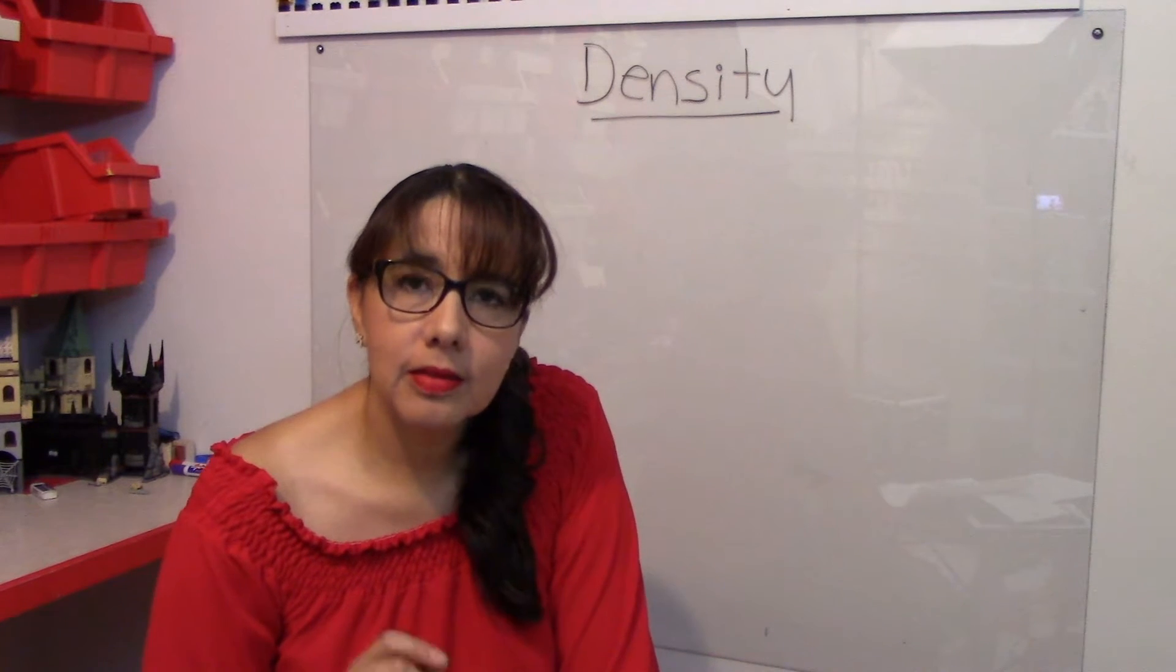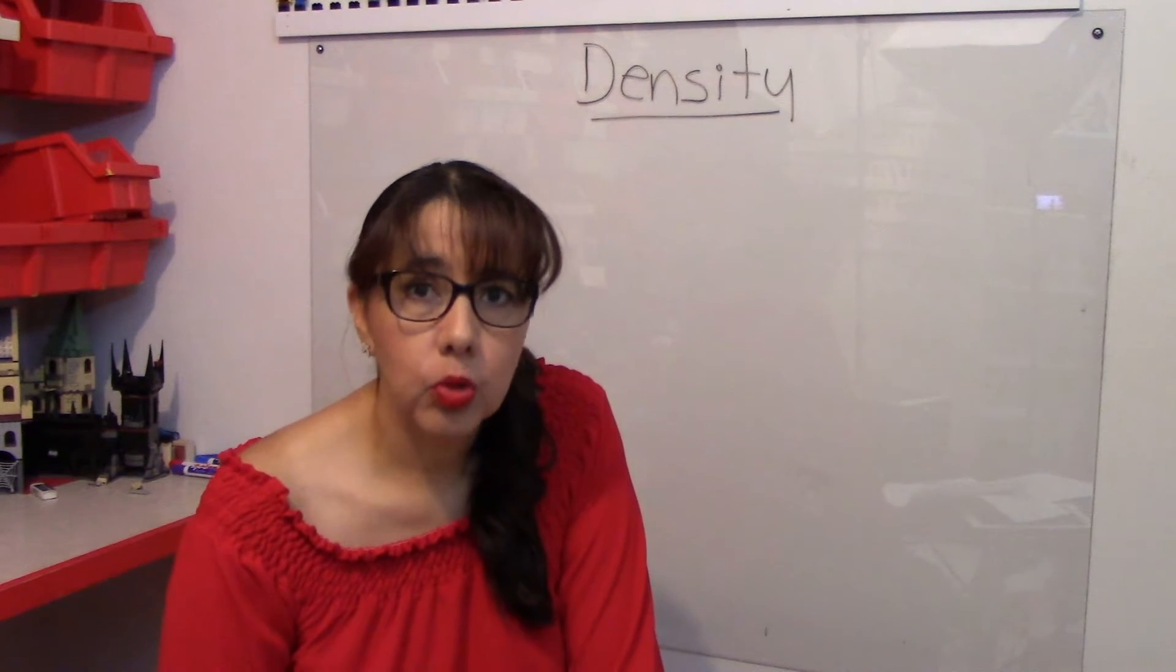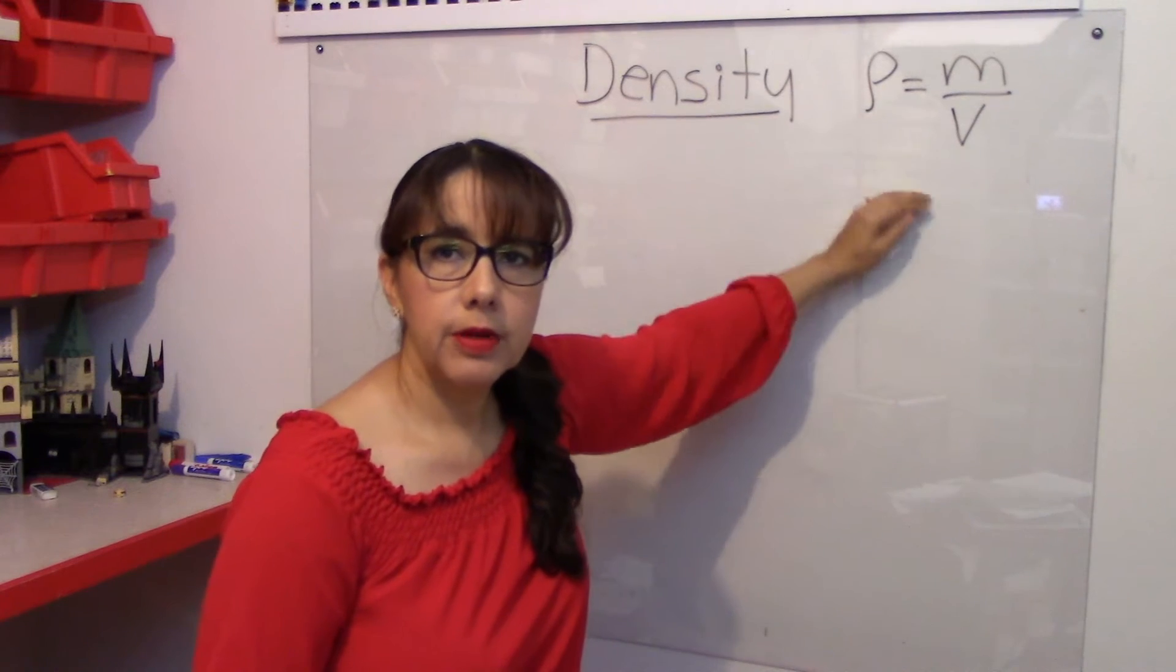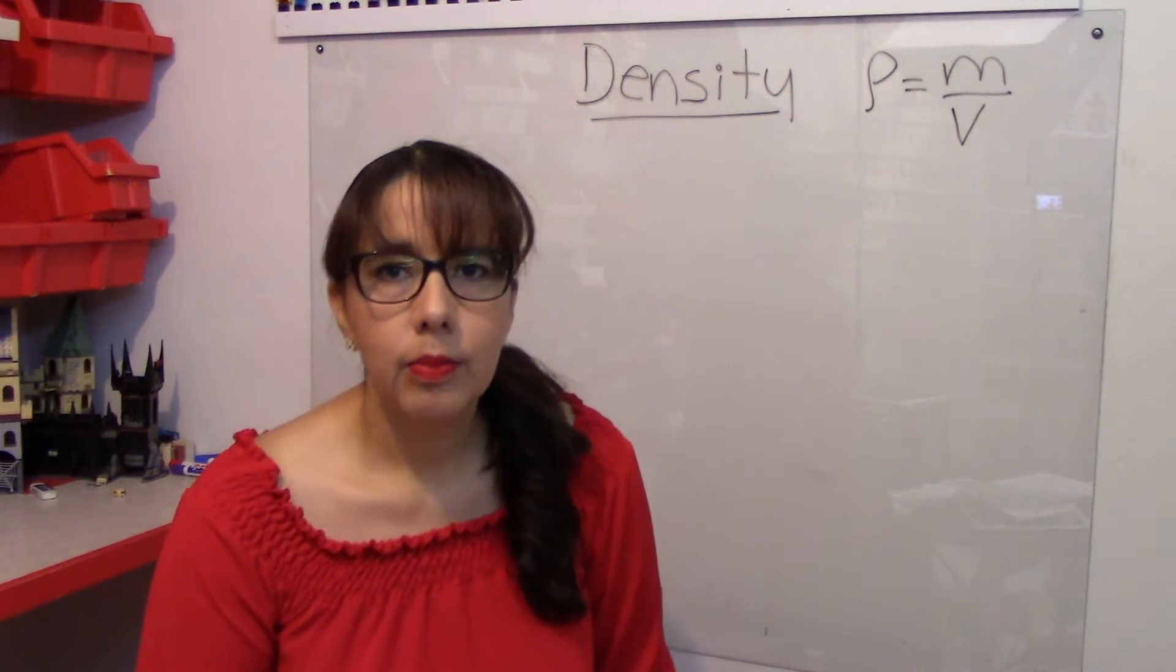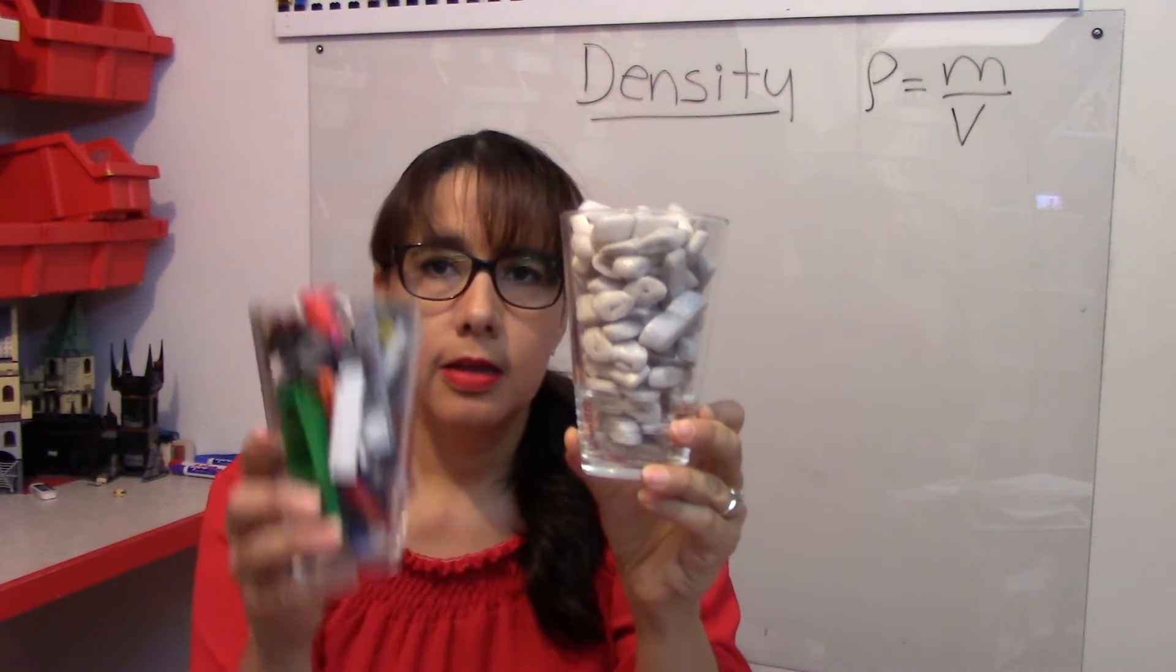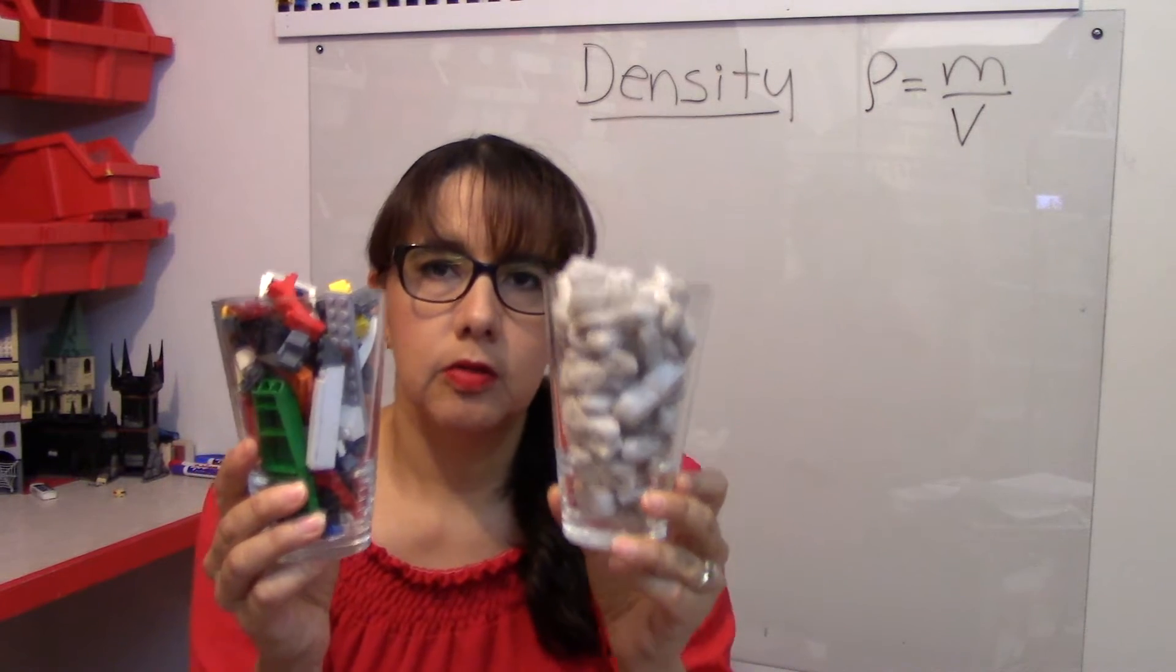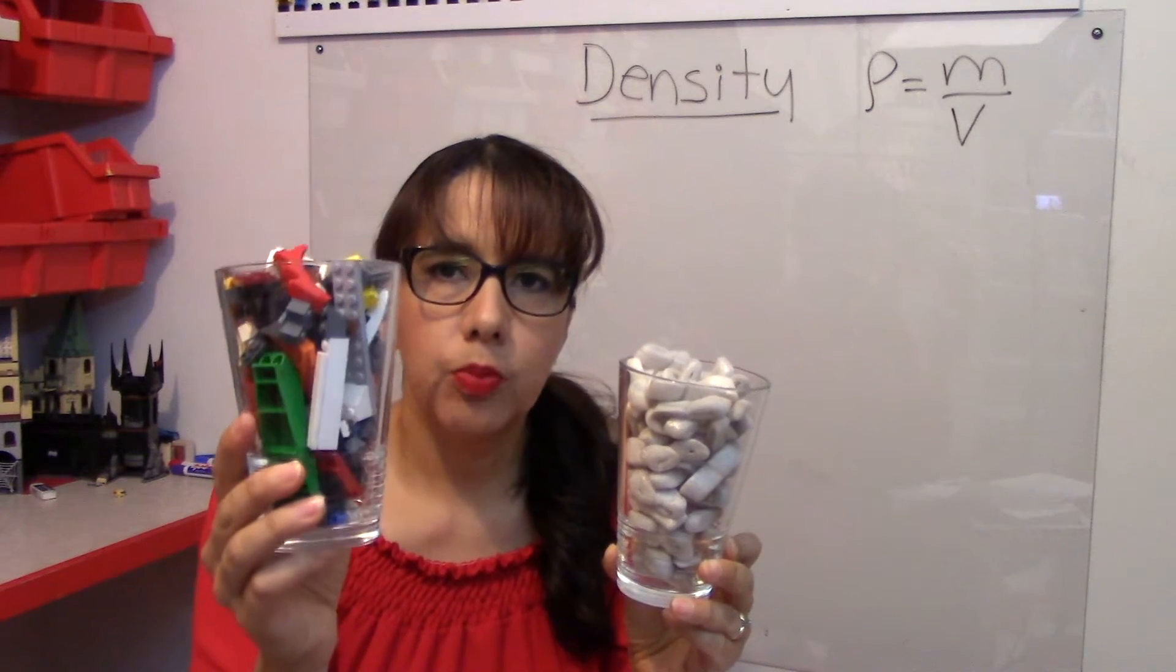Technically, density is defined as the amount of substance per unit of volume. So what is that? Mass divided by volume. For example, if we have this container and this container, what is the difference between them? This one is filled with packing peanuts. This one is filled with Lego pieces.